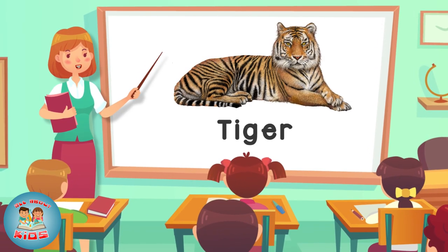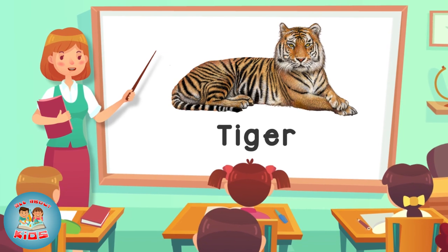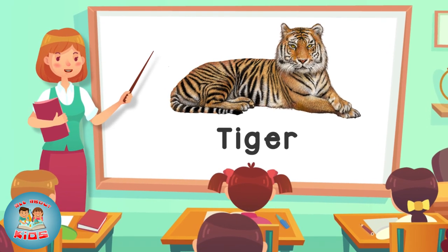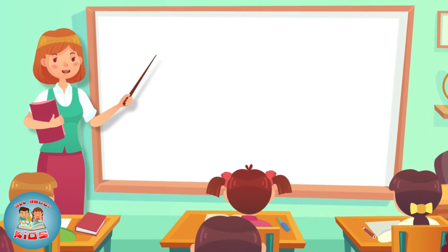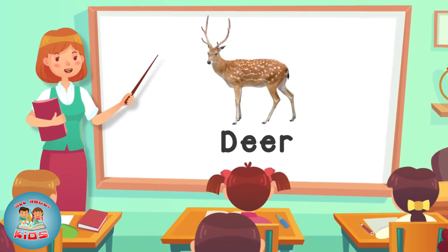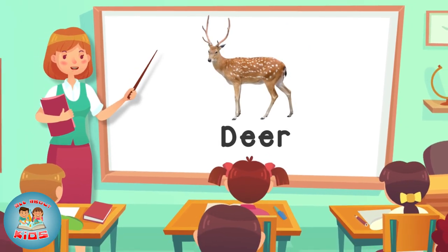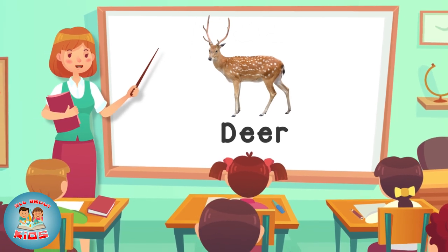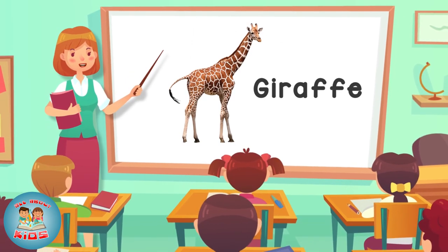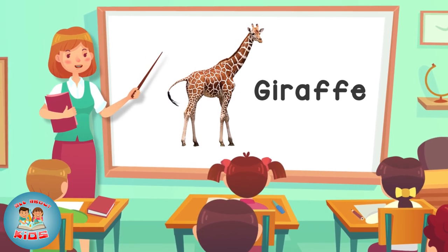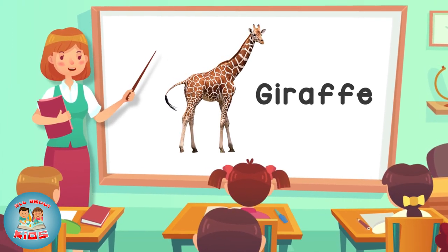Tiger — this is a tiger. Deer — this is a deer. Draft — this is a giraffe.